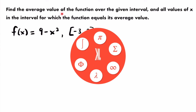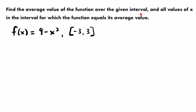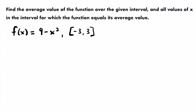We want to find the average value of the function over the given interval and all values of x in the interval for which the function equals its average value. Our function is f(x) = 9 minus x squared, and we're looking at the closed interval from negative 3 to 3.